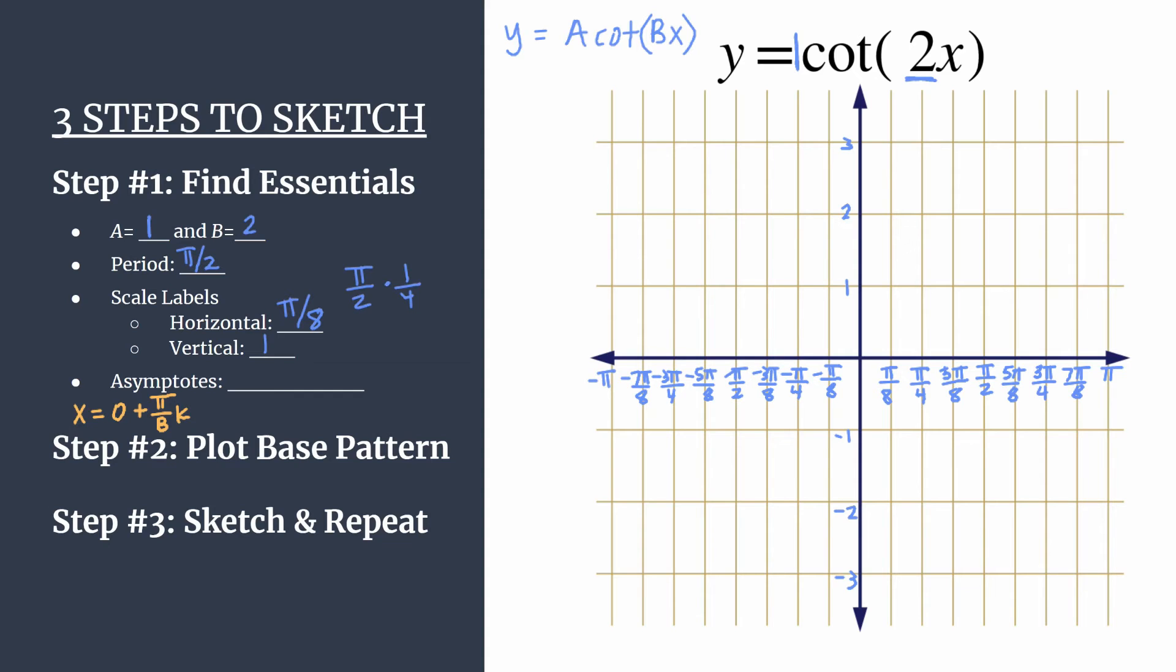And k represents an integer. And depending on what integer you substitute in, you'll get a different asymptote along the graph. So let's go ahead and find our asymptotes for this particular equation. We see our asymptote should be x equals zero plus pi over two k. So play around with this a little bit. See where your asymptotes are going to be. That way, when you actually graph the base pattern, you can compare and have a double check.